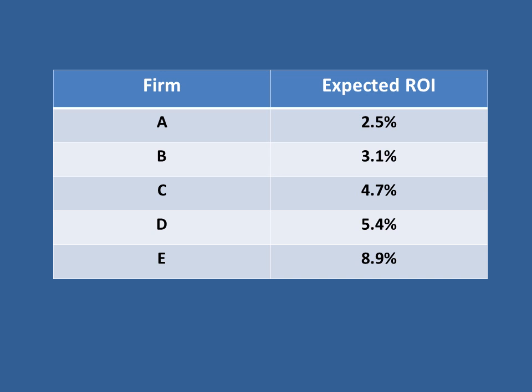We're going to do a simple example with five different firms — Firm A, B, C, D, and E — and they have expected returns on investment of a future project of 2.5%, 3.1%, 4.7%, 5.4%, and 8.9% respectively. We'll change the interest rate and see which firms decide to take out a loan, so we can start to build the quantity of loanable funds demanded.